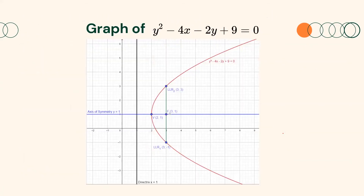This is the clearer illustration of the parabola with the equation y squared minus 4x minus 2y plus 9 equals 0.